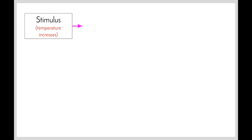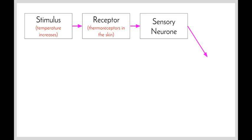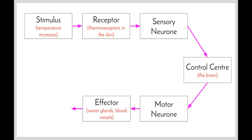Let's have a look at this flowchart that shows how this happens. Starting with the stimulus — an increase in temperature — this is detected by thermoreceptors in our skin, which then send a message via the sensory neuron to our control center, which is our brain. The control center interprets the message, works out what needs to happen, and sends a message along the motor neuron to the effectors. In this case, the sweat glands and the blood vessels are good examples of effectors, and the response brought about is sweating and vasodilation.